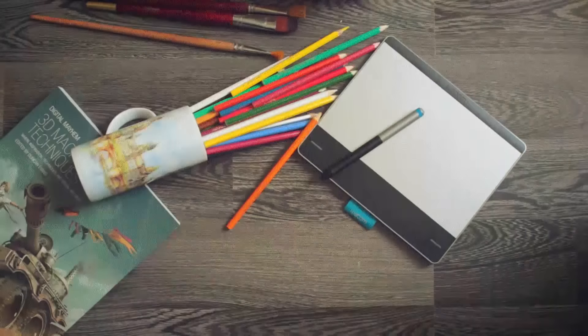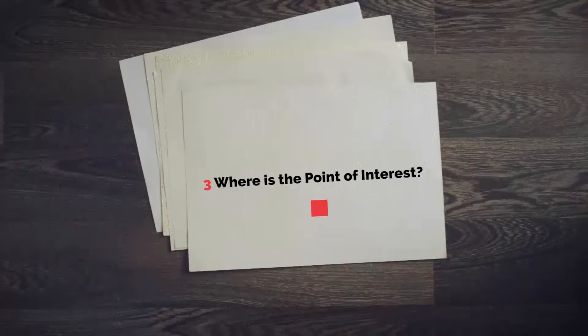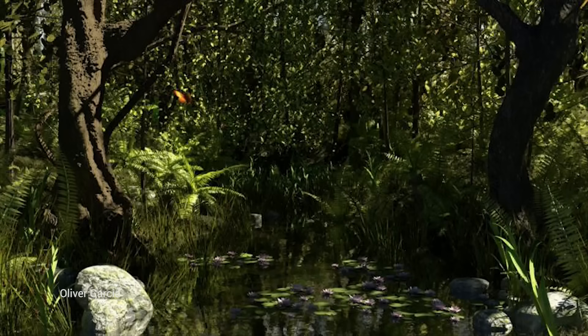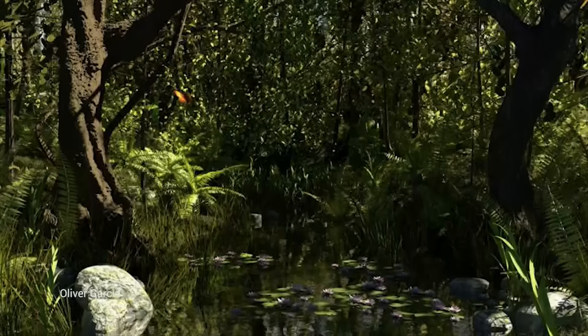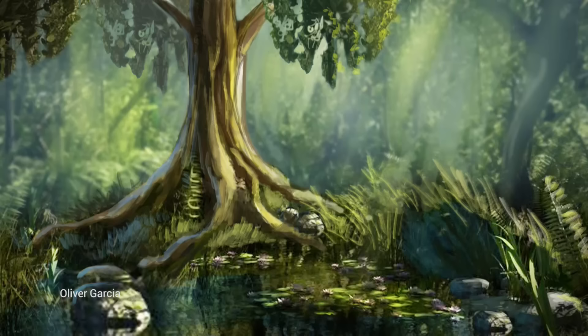The next point is: where is the point of interest? Let's illustrate it on the example of the image by Oliver Garcia. The vegetation and the details are just unbeatable, but the scene lacks the main subject. I just created a hero tree to serve as a point of interest, and that is exactly how you can avoid the composition pitfall of not having the main subject, the focal point or the point of interest. Now it looks very cool.